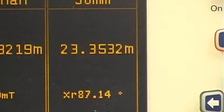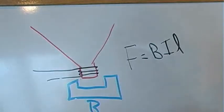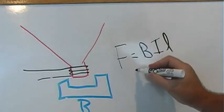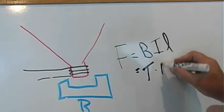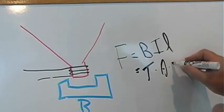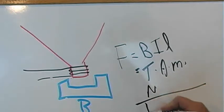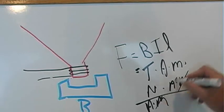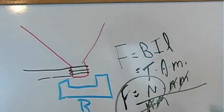So this force is equal to the strength of the magnetic field times the current running through the coil times the length of the wire in the coil. All right. All right, the dimensional analysis will be the magnetic field strength is Teslas, current is amps, and length, of course, would be in meters. Now, a Tesla is a newton per amp meter times amps times meters. Units of force are newtons. The dimensions work.